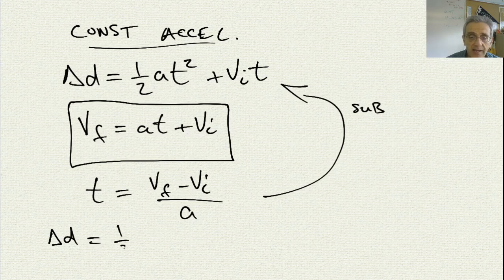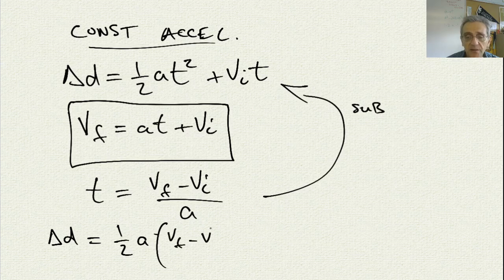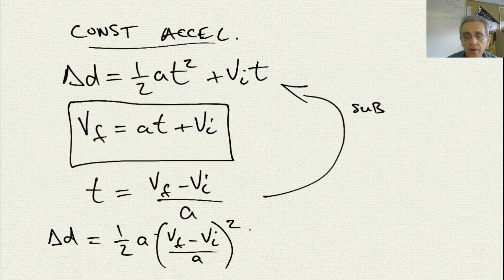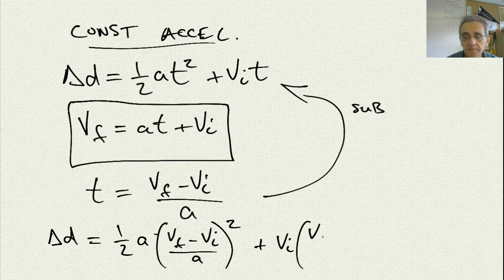I get 1 half a. Now instead of writing t squared, I'll write v-final minus v-initial divided by a all squared plus vi. Now I multiply by t again, v-f minus vi over a.